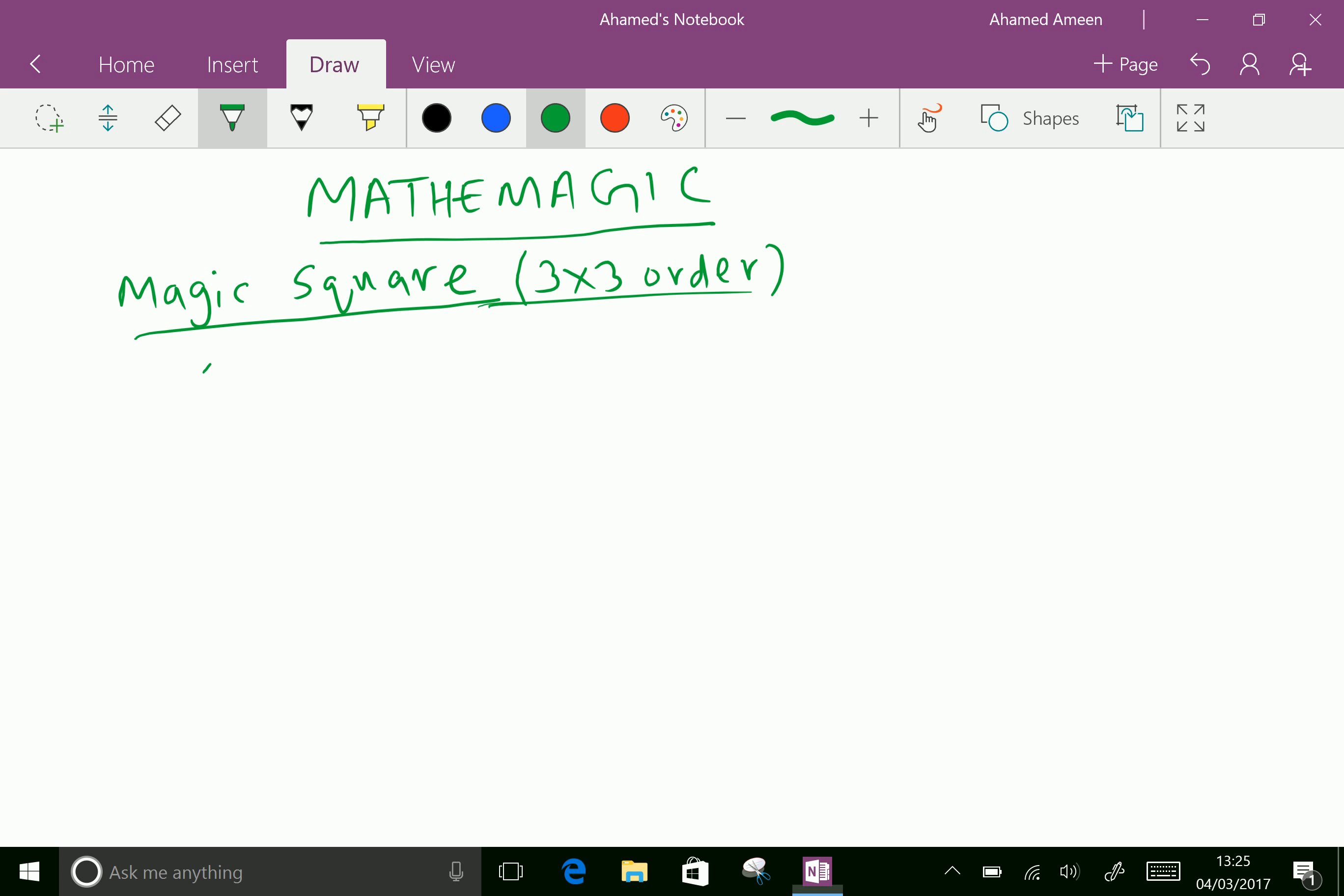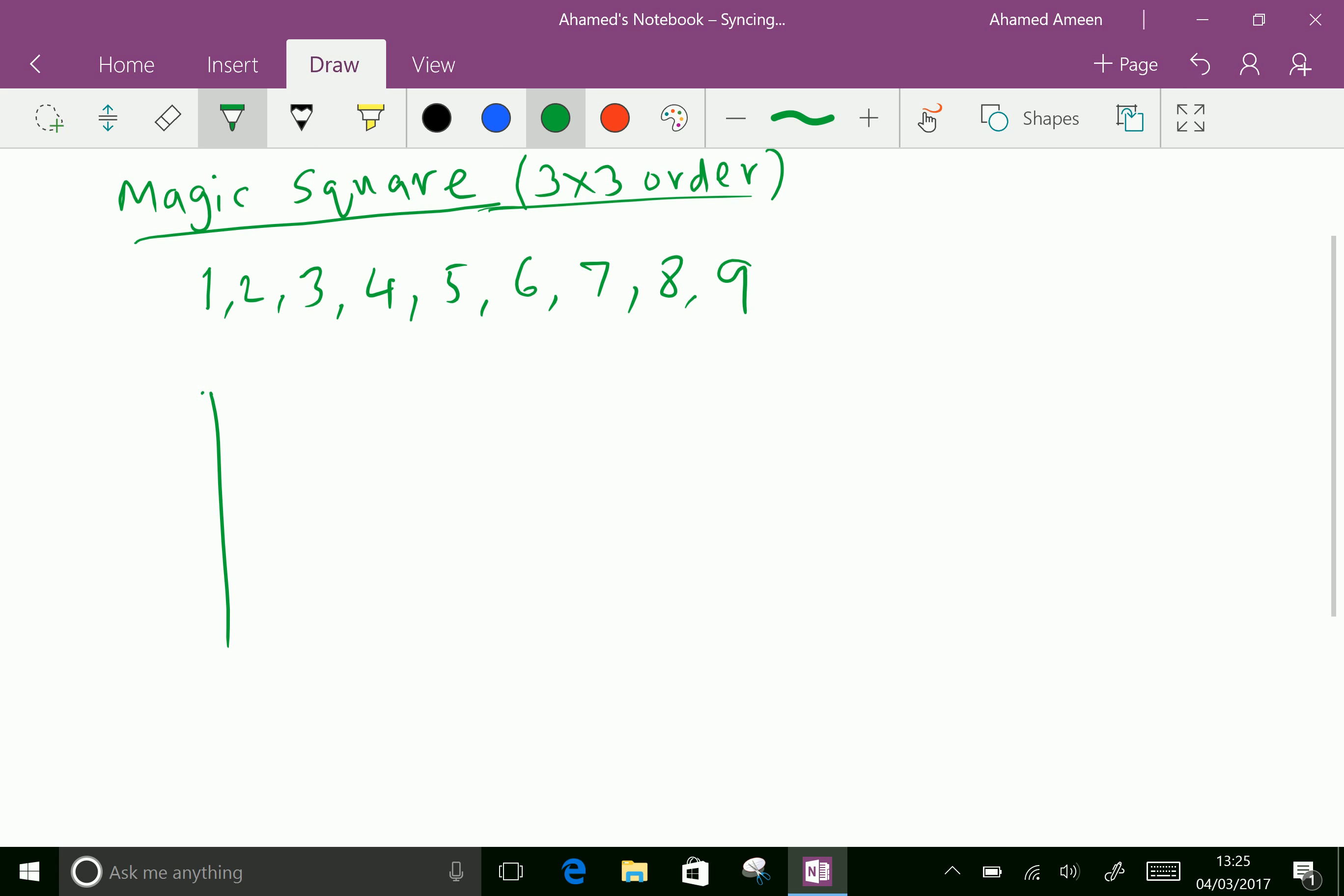Suppose take this number 1, 2, 3, 4, 5, 6, 7, 8, and 9. These numbers you have to fill in this square and get the addition in all the rows and all the columns, even in diagonals, all same numbers. How to fill? First of all, find the magic number. That is, what is the sum of numbers in one row or one column.